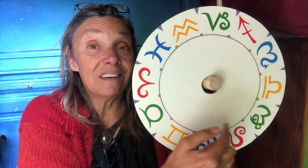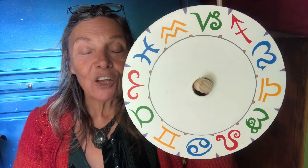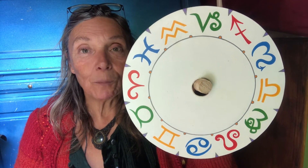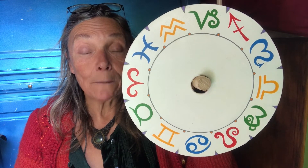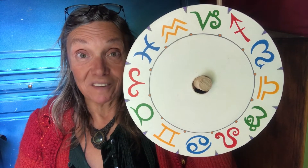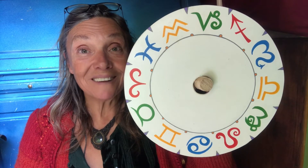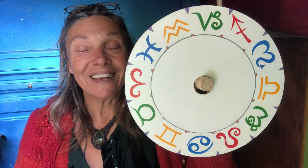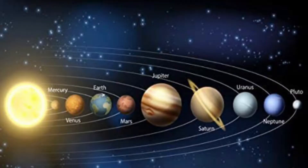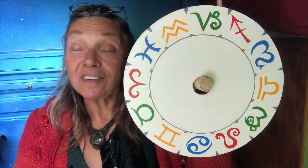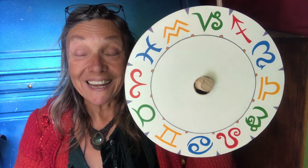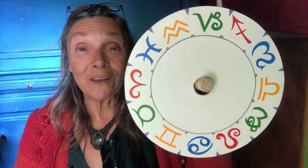In the next slide you'll see a representation of the planets in terms of their distance from the Sun. Mercury is the nearest, then Venus, then us — the Earth — then Mars, then Jupiter, then Saturn, then Uranus, then Neptune, and then Pluto.